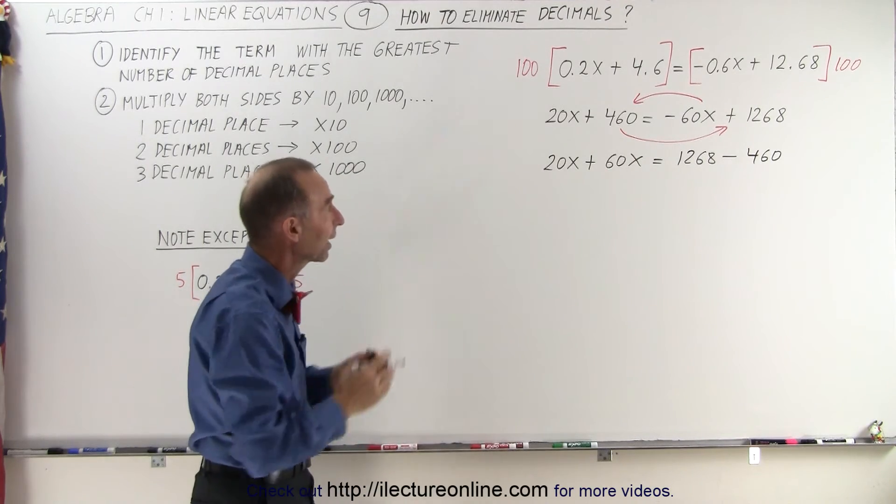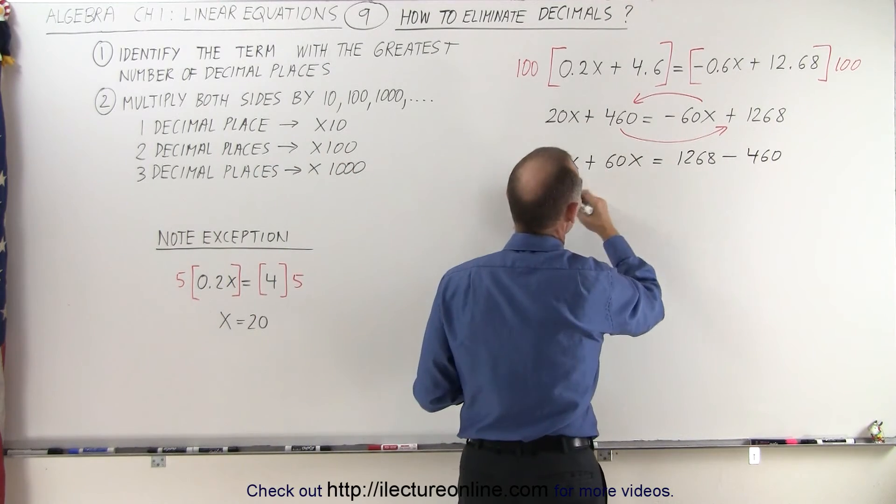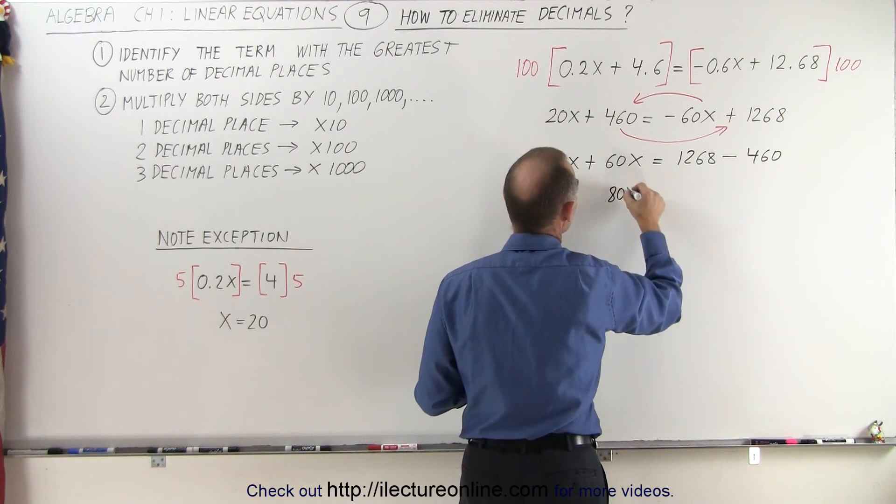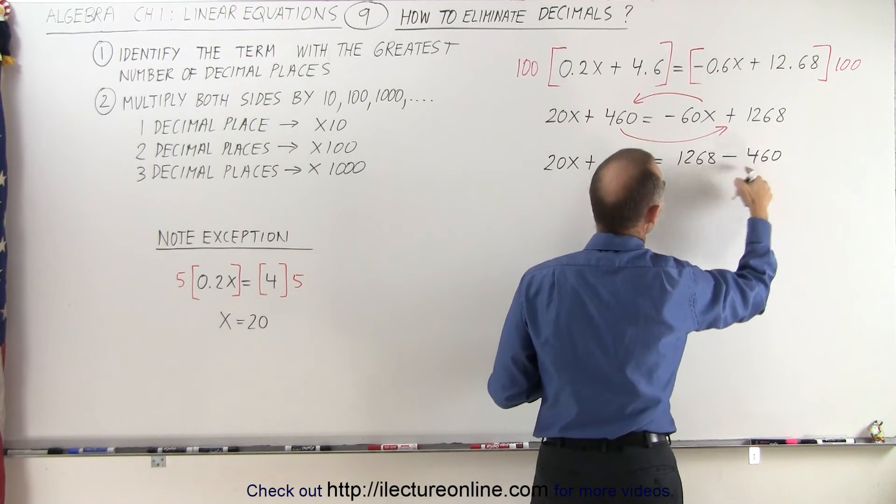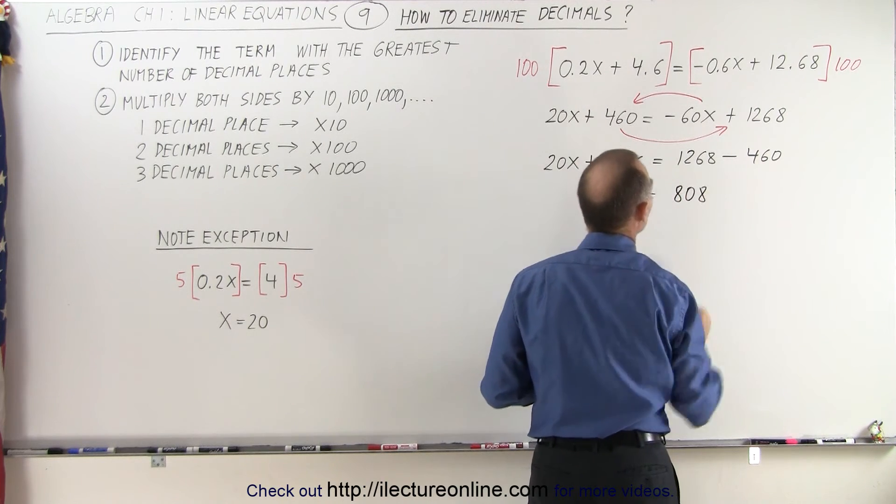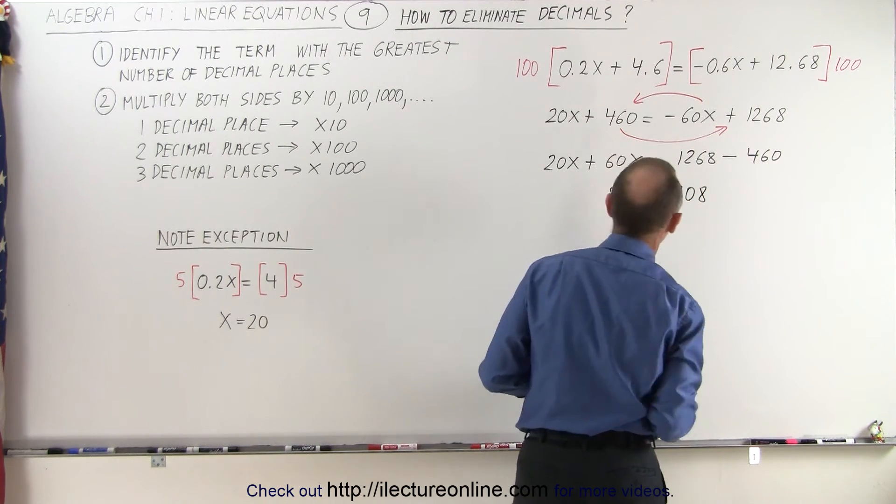The next step would be to combine like terms on the left side. 20x plus 60x is 80x. On the right side, 1,268 minus 460 would become 808. Let's see, that's 800. That's correct.